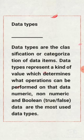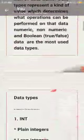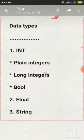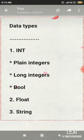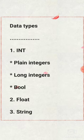Numeric, non-numeric and boolean data are the most used data types. The main data types are: number one, int. In int there are three types - plain integer, long integer, and boolean. Number two, float. And number three, string.